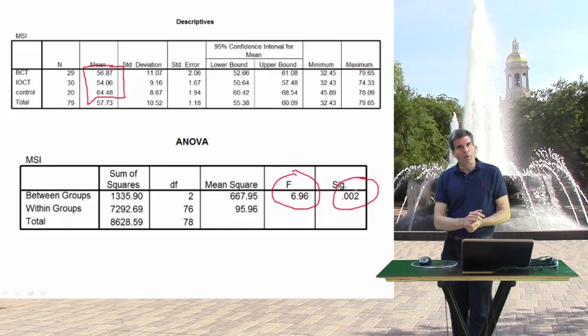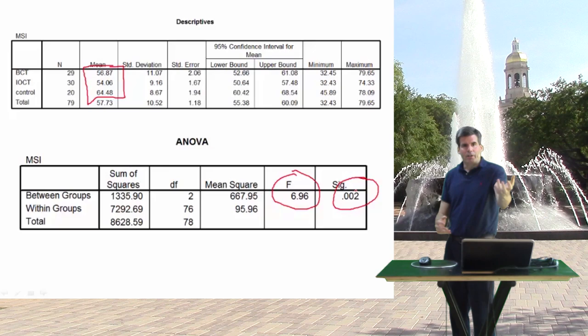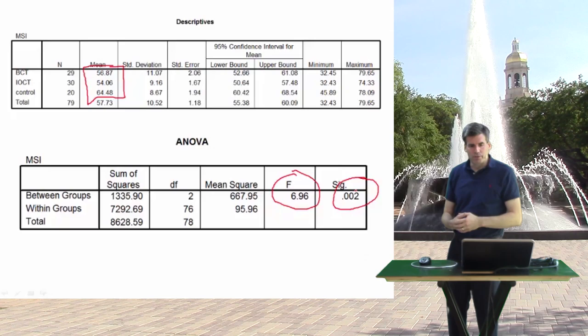Recall that with a focused question, it's always a comparison of something you can make with two hands — is something in this hand different from something in that hand? For example, we could say, is the insight-oriented group different from the control group? Or maybe are the two treatment groups together different from the control group? Those are all types of focused questions we can ask.